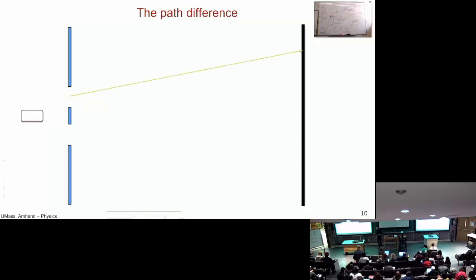We have some of the laser light going through the top slit to this point up here. Some comes from the bottom slit and also goes to this point. What's the difference? How much further does the bottom travel than the top? That's the question we're looking at.